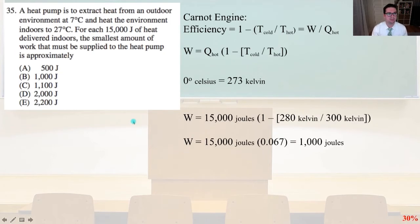Number 35, a heat pump is to extract heat from an outdoor environment at 7 degrees Celsius and heat the environment indoors to 27 degrees Celsius. For each 15,000 joules of heat delivered indoors, the smallest amount of work that must be supplied to the heat pump is approximately. So here we're going to use the Carnot engine.